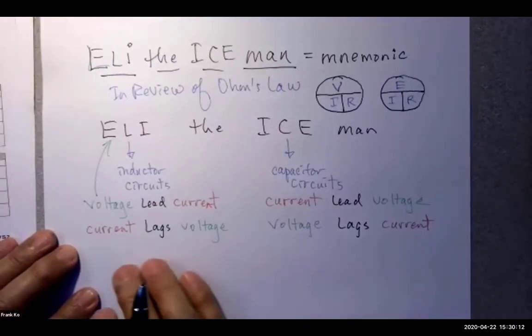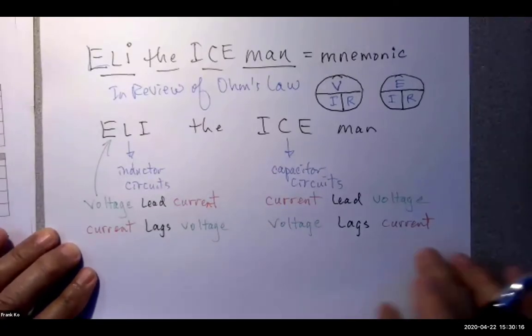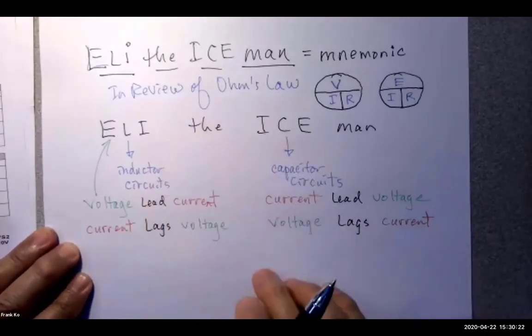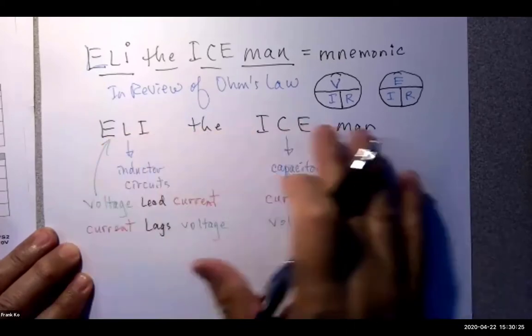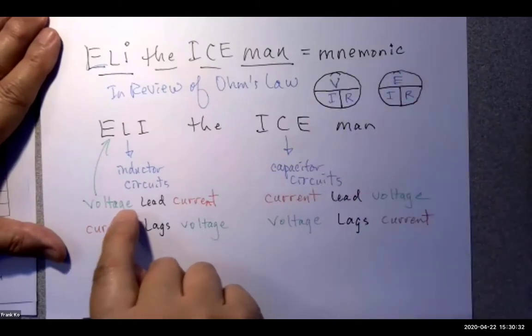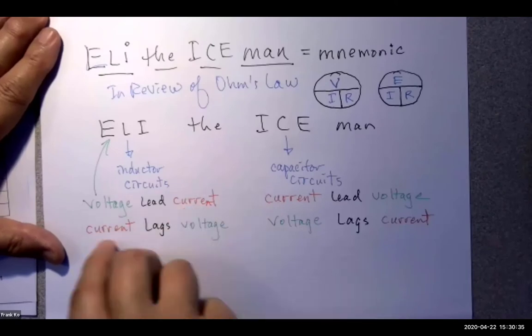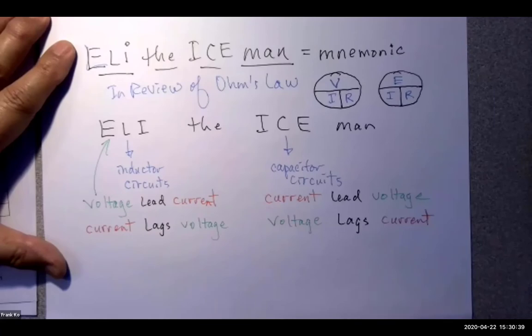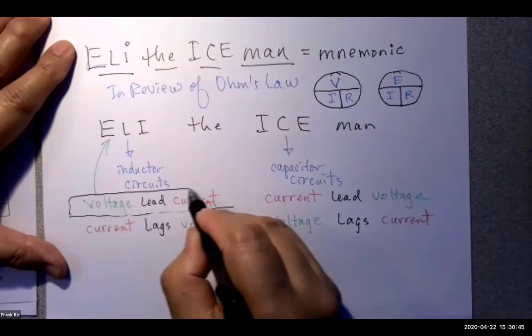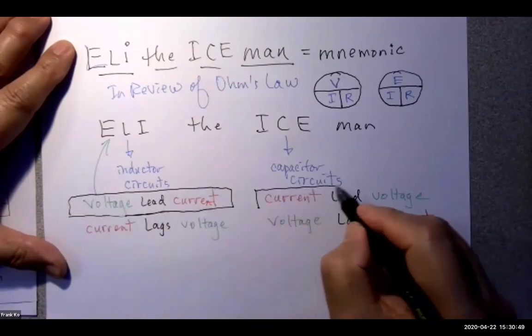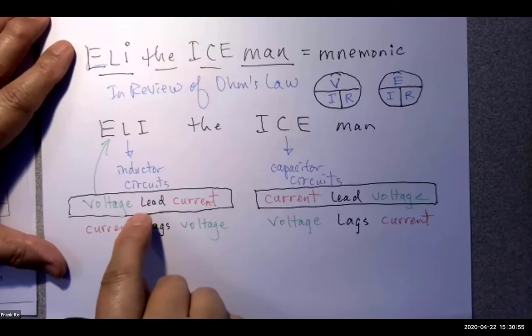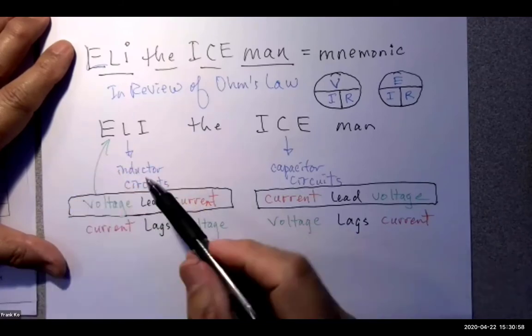This is extraordinarily profound. As we get into the next topic of AC with these circuits, it's very important we remember Eli the Iceman. Eli the Iceman helps us remember what physical quantity comes before what physical quantity. And of these two sentences, the ones you really want to take to heart are these. Which quantity comes first? Voltage leads current in a what type of circuit? Inductor circuit.